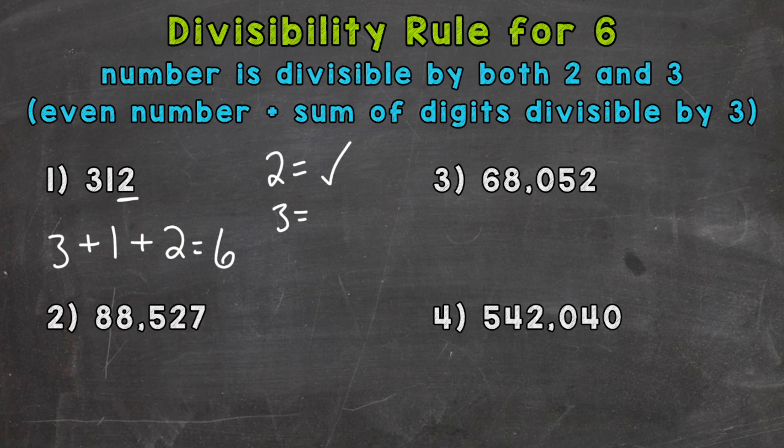So yes, 6 is divisible by 3, the sum of the digits. Therefore, the original number 312 is divisible by 3. Since that number is divisible by both 2 and 3, it is divisible by 6.